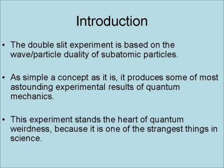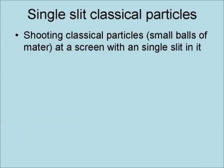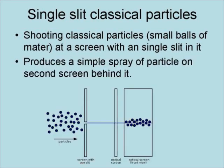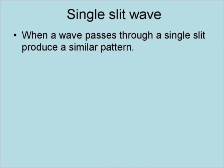This experiment stands at the heart of quantum weirdness because it is one of the strangest things in science. Shooting classical particles — that is, small balls of matter — at a screen with a single slit in it produces a simple spray of particles on the second screen behind it. When a wave passes through a single slit, it produces a similar pattern.